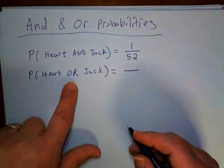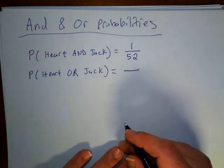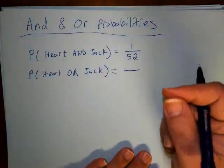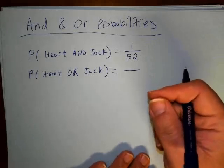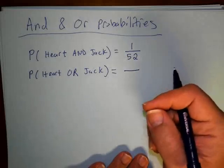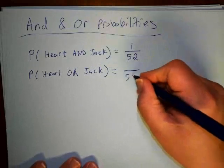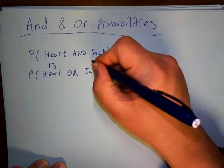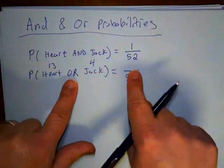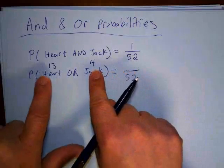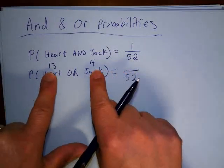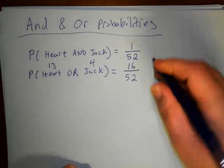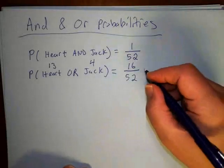For heart OR jack: the card doesn't have to be both — if it's a heart, the event occurs; if it's a jack, the event occurs. There are 13 hearts and 4 jacks, but I don't just add to get 17, because one of those jacks — the jack of hearts — is already counted among the 13 hearts. So it's 13 plus 3 more jacks, giving 16 out of 52.